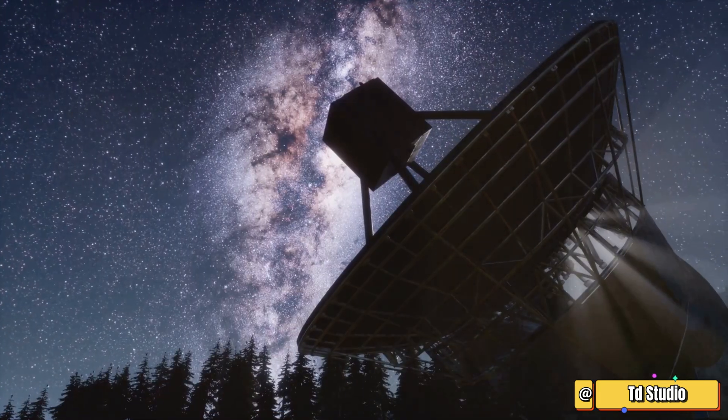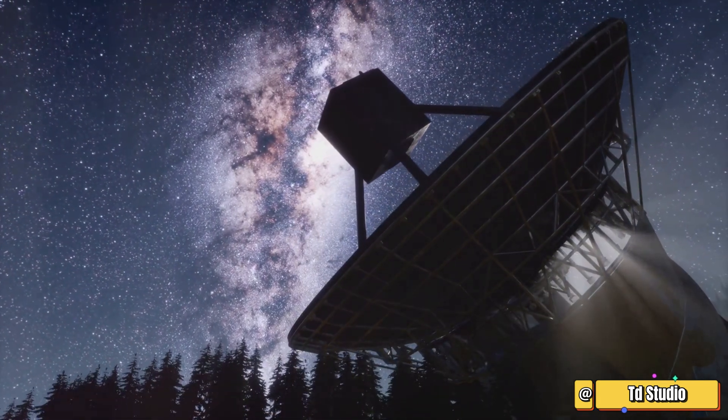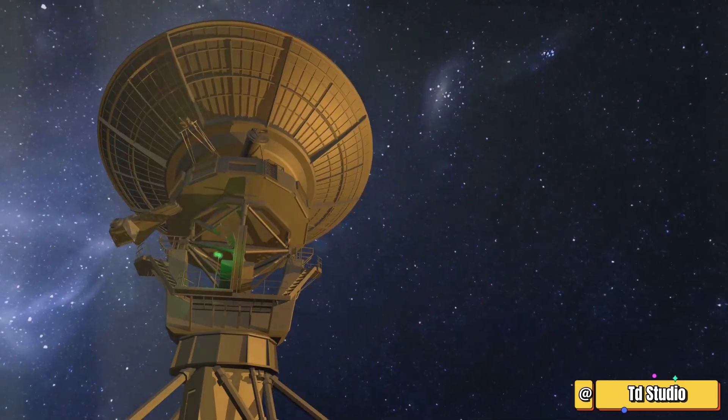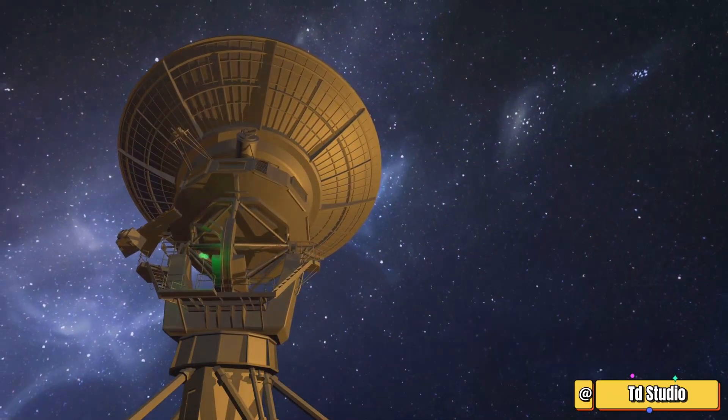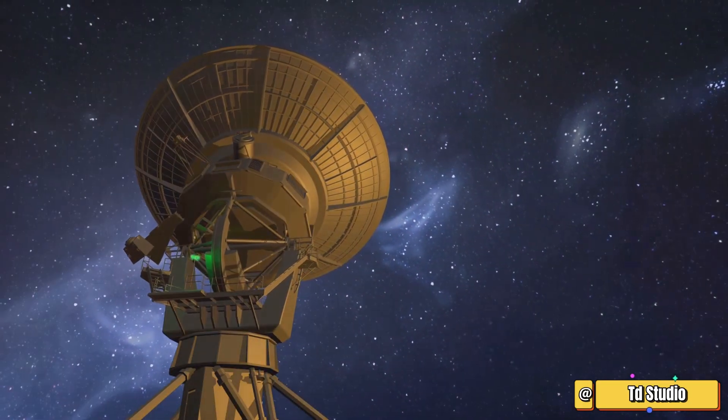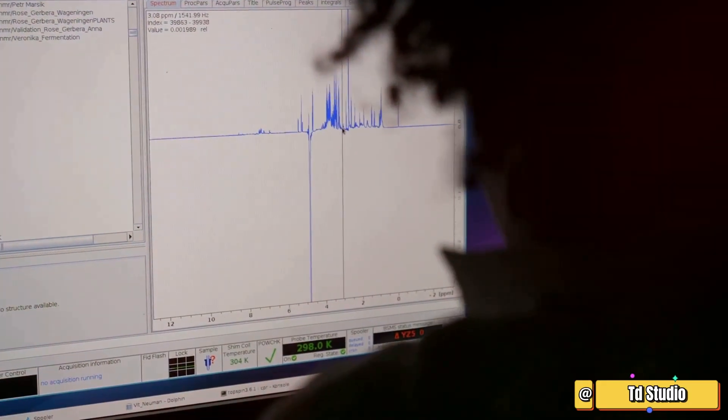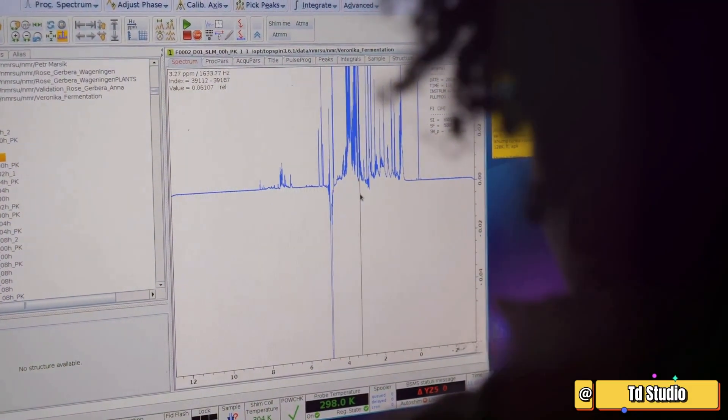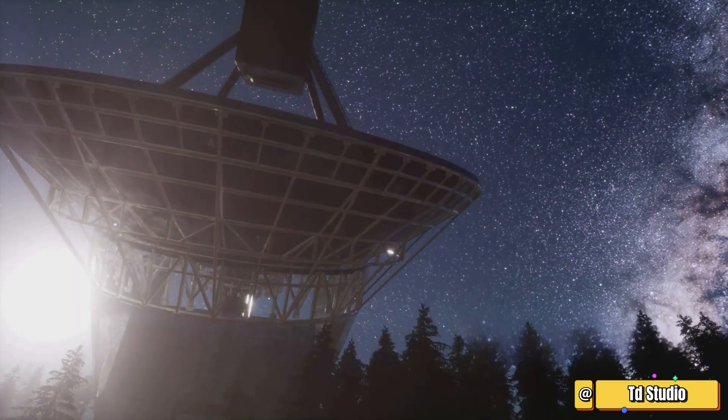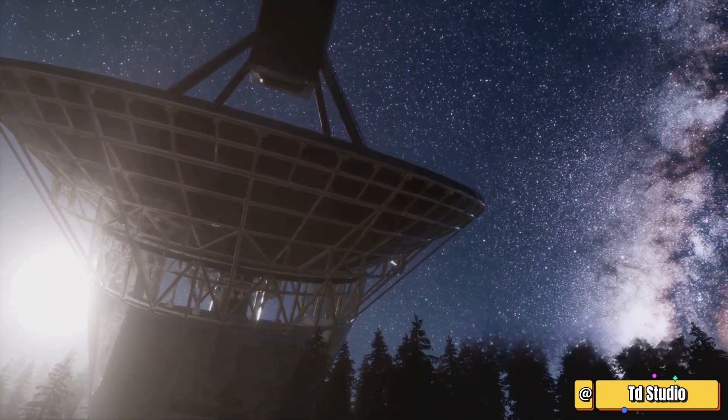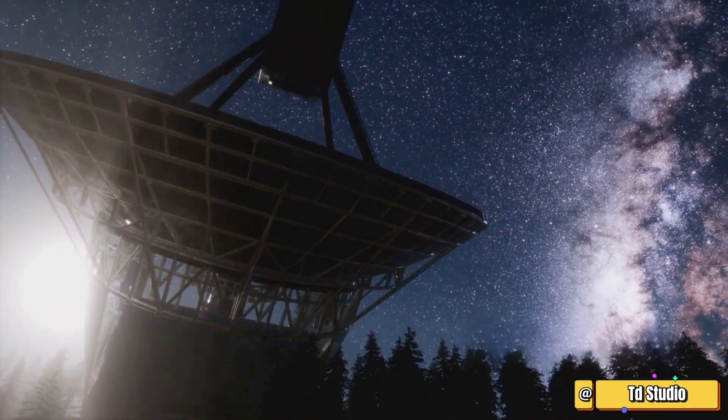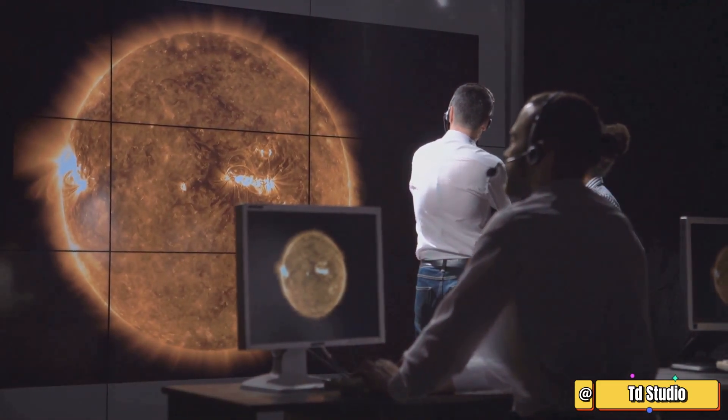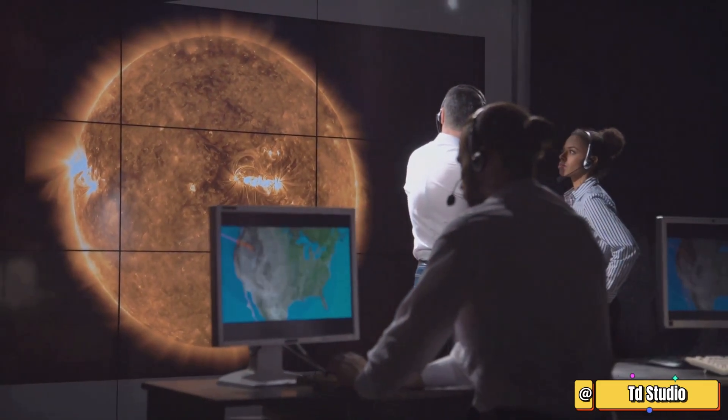One of the most famous examples of a mysterious signal from space is the WOW signal, detected in 1977. This strong, narrowband signal lasted for 72 seconds and originated from the constellation Sagittarius. Its characteristics were consistent with what scientists expected from an artificial signal, and its intensity was remarkable. Despite numerous attempts to re-observe the signal, it has never been detected again. Its origin remains a mystery, and the WOW signal continues to be a source of debate and intrigue among astronomers and enthusiasts alike.